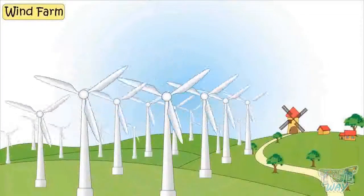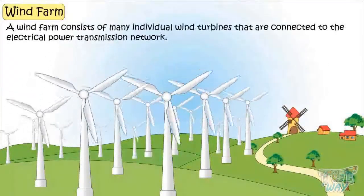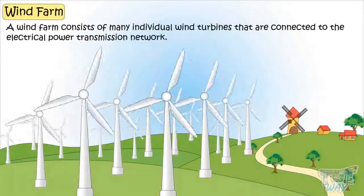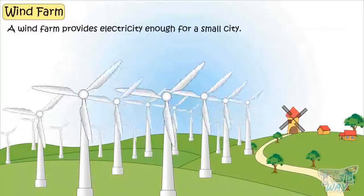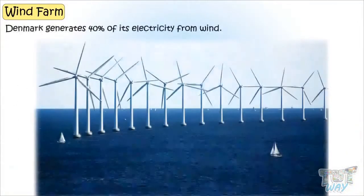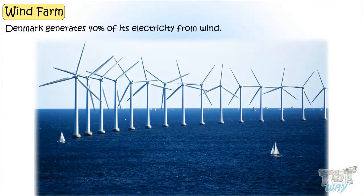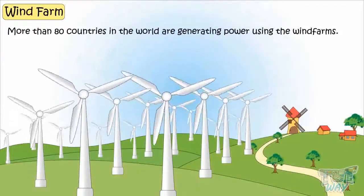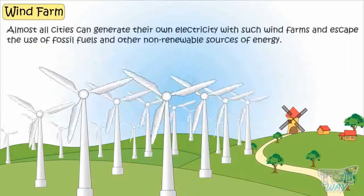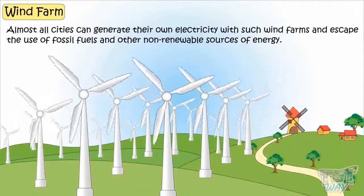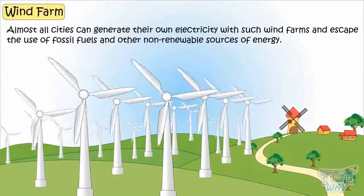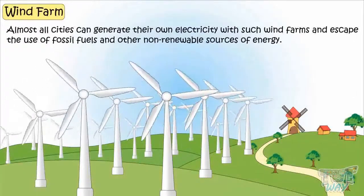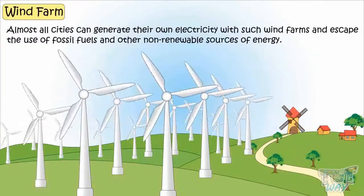Wind farms consist of many individual wind turbines which are connected to the electrical power transmission network. A wind farm provides enough electricity for a small city. Denmark generates 40% of its electricity from wind, and more than 80 countries in the world are generating power using wind farms. Almost all cities can generate their own electricity from wind farms and escape the use of fossil fuels and other non-renewable sources of energy, preventing our Earth from getting polluted and saving our valuable non-renewable resources.